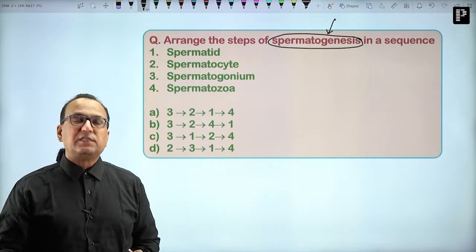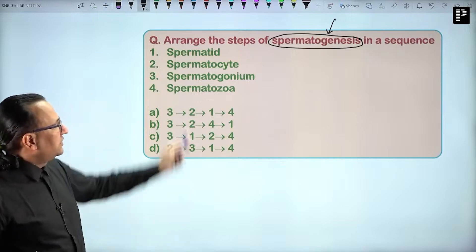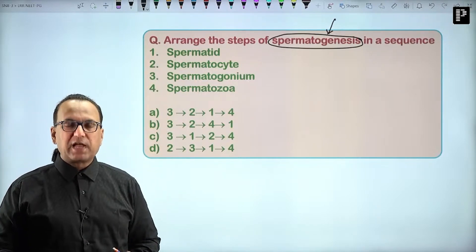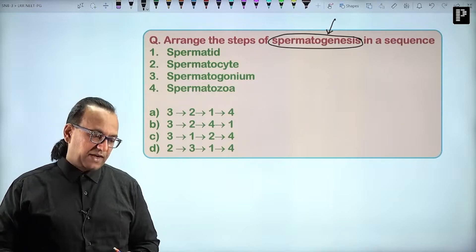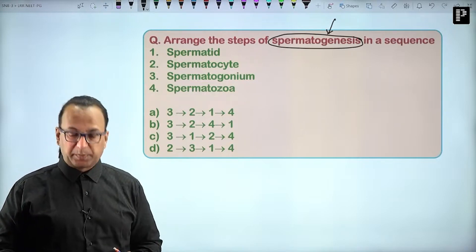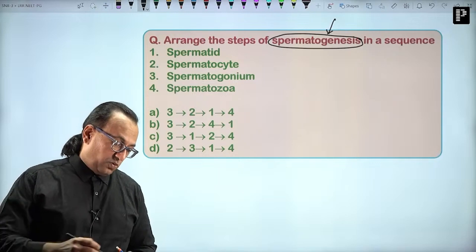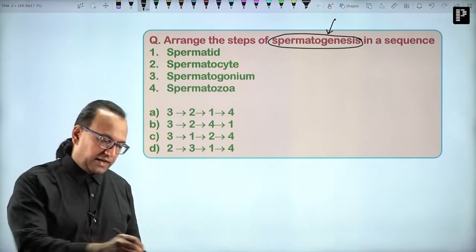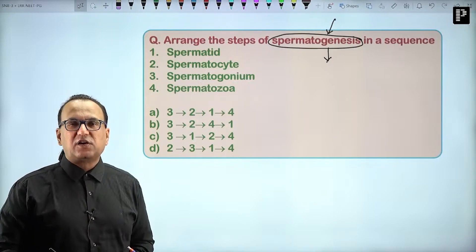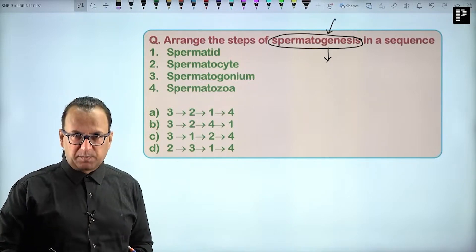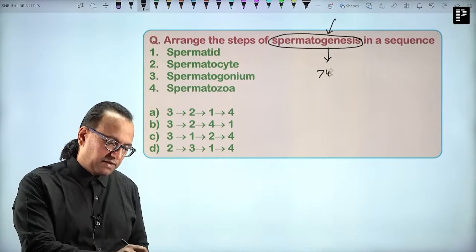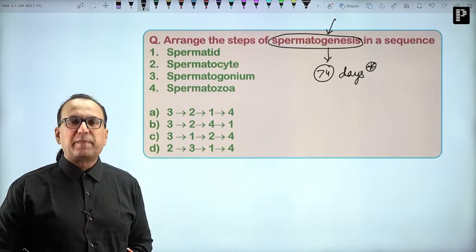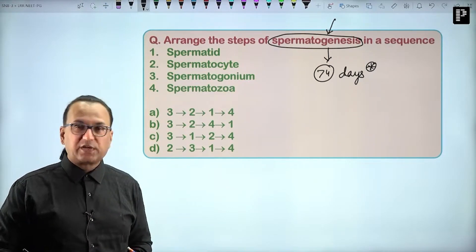In between, I will keep adding some facts which will be important for your preparation. My way of doing things is I take one question and take care of ten more in that single question. So a question can come: How many days does it take for spermatogenesis to complete? Remember the answer is 74 days.